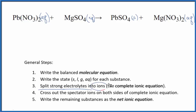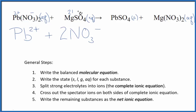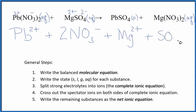Now we can split the strong electrolytes into their ions — that gives us the complete ionic equation. We don't know the charge on lead directly, but the nitrate ion is 1 minus, and since we have two of them, lead is going to be 2 plus. So we have the Pb2+ ion, plus the NO3− ion, and we have two of them so we put a coefficient of 2. Magnesium is group 2 on the periodic table — it's 2 plus. The sulfate is always 2 minus — good one to remember. So we have the Mg2+ ion and then the SO4²⁻ ion.